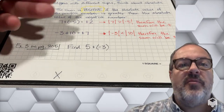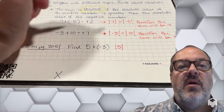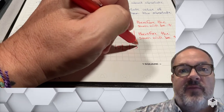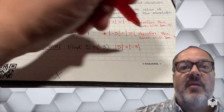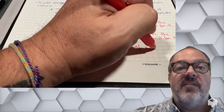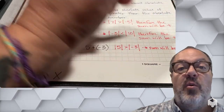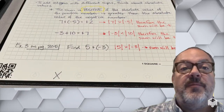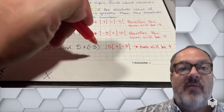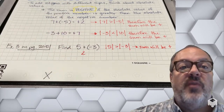In example 3 on page 205, I want to find the sum of 5 plus negative 3. Before I even do that, I want to figure out what the sign of my sum is going to be. The absolute value of 5 is greater than the absolute value of negative 3, so my sum is going to be positive. Knowing that is going to be helpful. So 5 plus negative 3 is going to be 2.